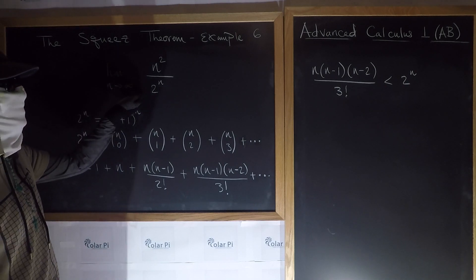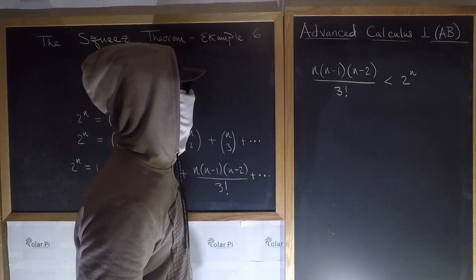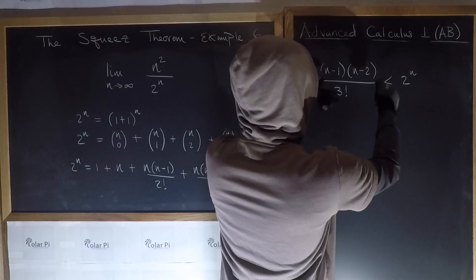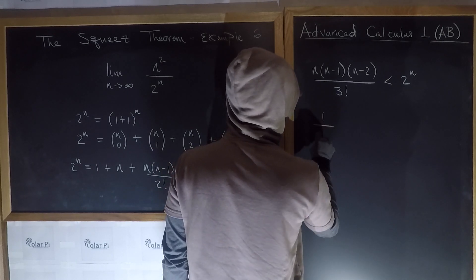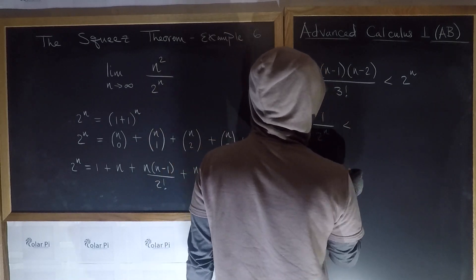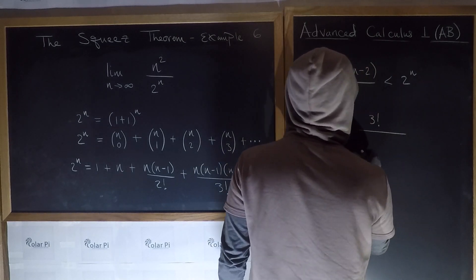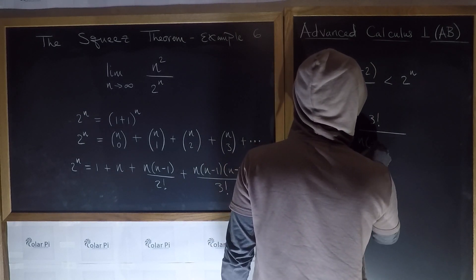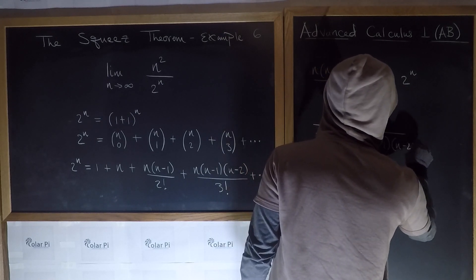Now, 2 to the n is downstairs here, so we want to get 2 to the n downstairs on that part. So the way we do that is take the reciprocal of both sides of this, and if we do, we get 1 over 2 to the n is less than 3 factorial divided by n times n minus 1 times n minus 2, right?